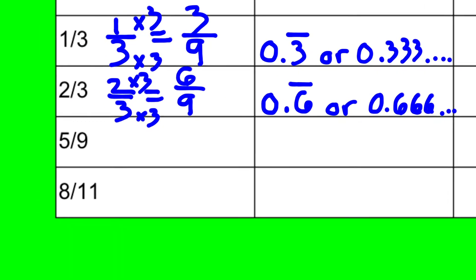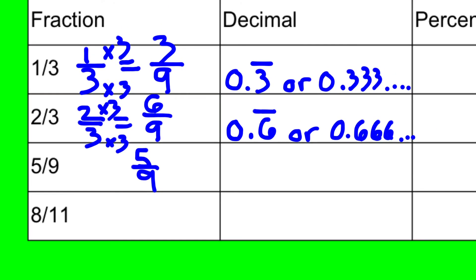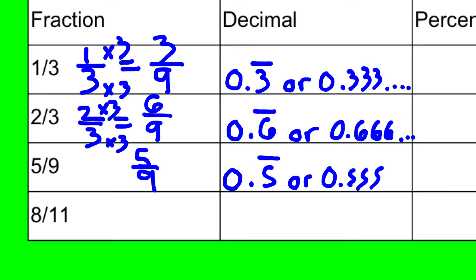So knowing that pattern, if we get one that's already out of nine, we just recognize that pattern — as a decimal, that's zero and five-tenths repeating in bar notation, or zero point five, five, five...